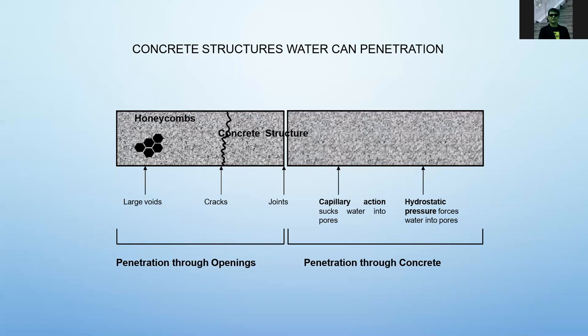We need to address the connection of the joints of the building. Another factor is capillary action — the characteristic of concrete to absorb water because concrete is porous, allowing water to pass through. Another is hydrostatic pressure, which forces water on the other side of the wall, slab, or deck to push through the concrete. So penetration can occur through openings, joints, cracks, voids, capillary action, and hydrostatic pressure.